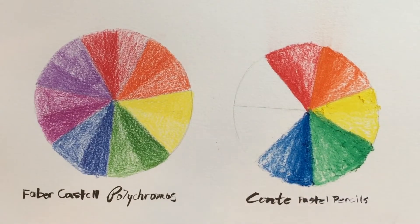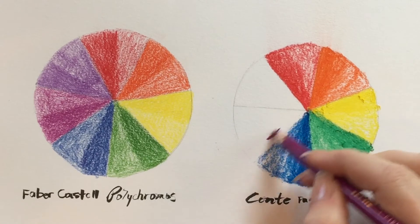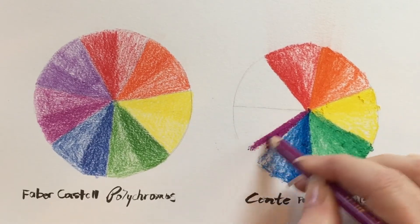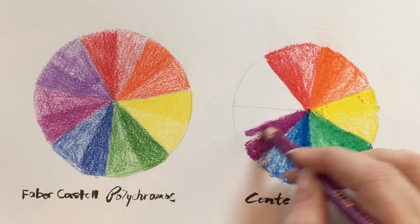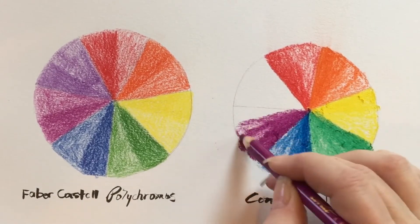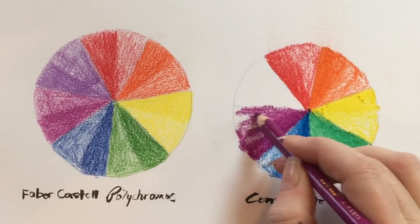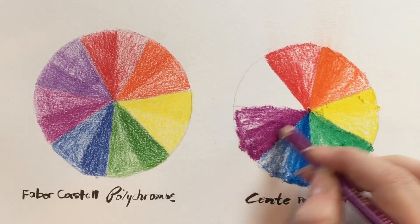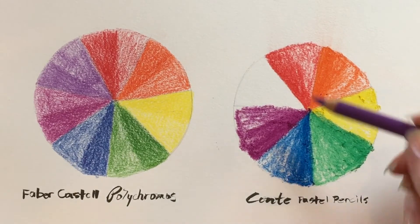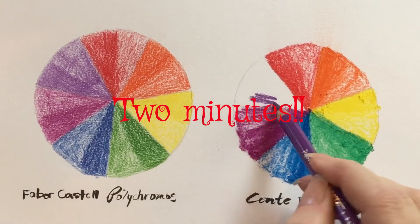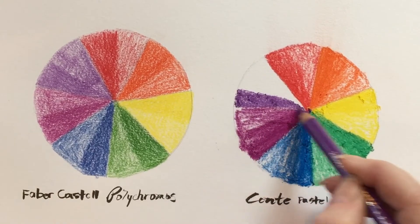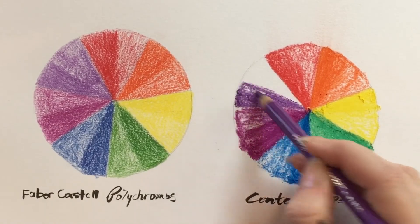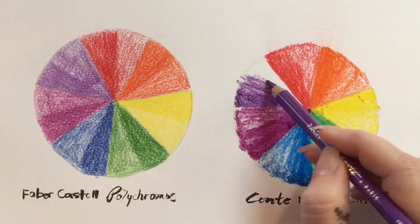You can probably tell just by how I'm using the pencils. I'm a little more used to using the pastel pencils versus the regular colored pencils. This has taken me four minutes so far. And now we're down to the violet color. So, this took about four and a half minutes.